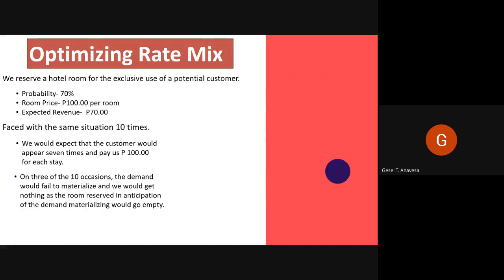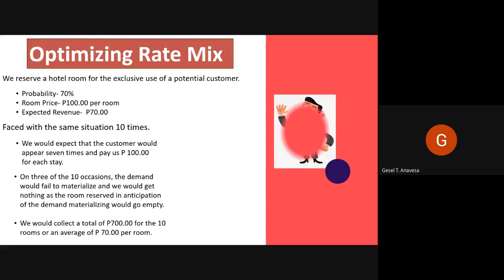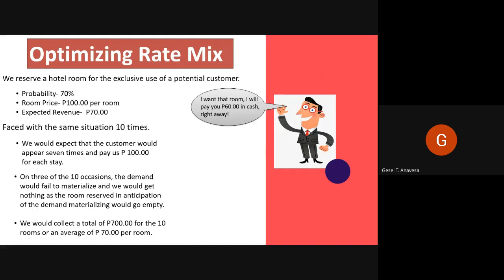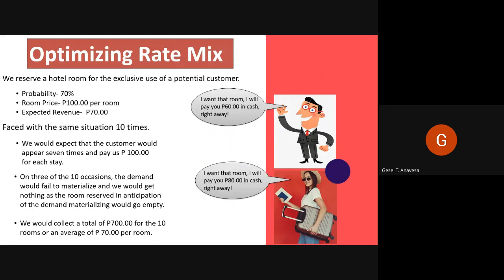On three of the ten occasions, the demand would fail to materialize and we would get nothing as the reserved room would go empty. We would collect a total of 700 pesos for 10 rooms — an average of 70 pesos per room. Now suppose another customer offered us 60 pesos for the room in cash on the spot, and another customer came and offered 80 pesos in cash right away. The decision for the first customer offering 60 pesos is no.